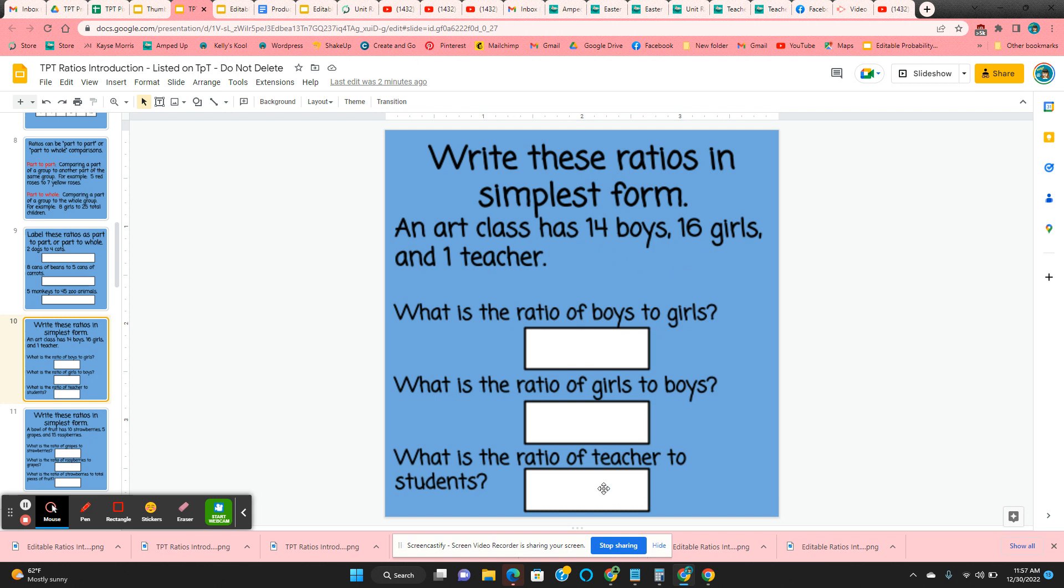Girls to boys, 8 to 7. And the ratio of teacher to students, they're going to have to total the students, which would be 30, so 1 to 30.